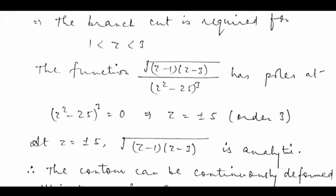Now after taking the branch cut, we identify where the poles of the function are. The denominator (z squared minus 25) to the power 3 has zeros at z equals plus or minus 5, and because of the cube present, the poles are actually of order 3 — though that will not be significant for us.